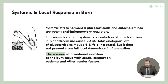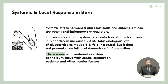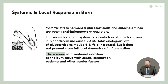So how is it possible that in one living person, locally you have huge inflammation, but systemically you have a huge concentration of anti-inflammatory mediators — and yet they do not prevent the full local dynamics of inflammation? They do not stop local reactions. It means that the local zone and systemic zone of regulation are somehow separated, delineated informationally — by informational isolation of the burn focus through stasis, venous congestion, edema, and other barrier functions.